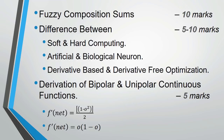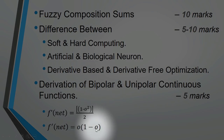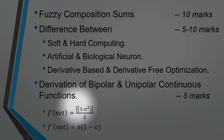In the next slide you will see fuzzy composition — max-min and max-product. The sums here are also solved and are very important. Then there are important topic differences: artificial versus biological neuron, soft computing versus hard computing, and derivation-based versus derivative-free optimization. There is also the derivation of bipolar and unipolar continuous activation functions — you have to prove those formulas.